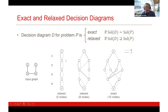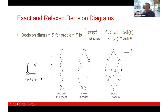We can refine the relaxation by splitting nodes in layers. The middle relaxation is more refined — for example, selecting vertices one and two correctly recognizes that three and four can no longer be selected. However, some non-solutions remain, such as the pair two and four which is not an independent set. To fix this, we need to further refine the diagram.